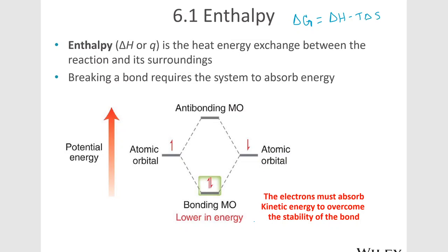Delta G is equal to delta H minus T delta S. We're going to be looking at each of the terms in this equation independently and how they affect the overall delta G. Delta G is the driving force for whether a reaction will occur or not — it's the free energy of the reaction.